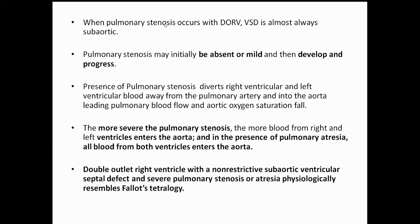If DORV is associated with pulmonary stenosis, the VSD is mostly subaortic. The presence of pulmonary stenosis diverts right ventricular and left ventricular blood away from the pulmonary artery. With more severe pulmonary stenosis, blood flow from both ventricles enters the aorta. In the presence of pulmonary atresia, all blood goes into the aorta, meaning the entire blood from the ventricles goes into the aorta.